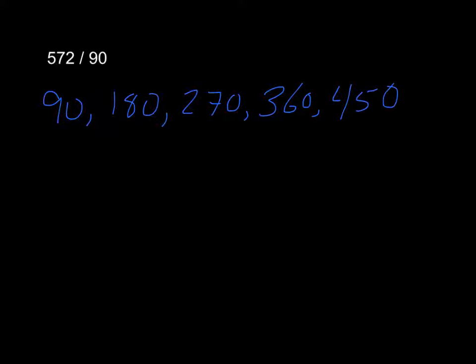Let's look at our next problem. 572 divided by 90. The first thing I can do is write out the multiples of 90. 90, 180, 270, 360, 450, 540, and I'm going to stop at 540 because I know that's close to 572. So I'm going to estimate this as 540 divided by 90, which is 6.